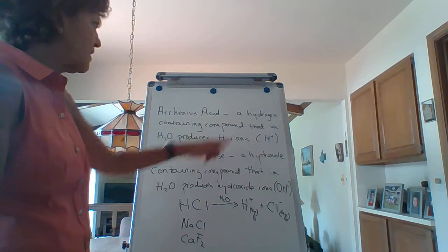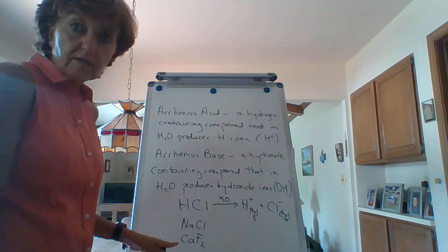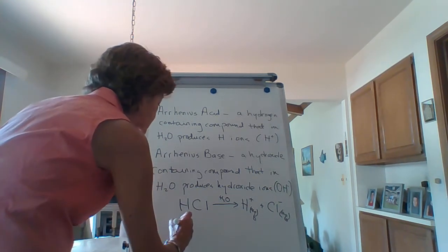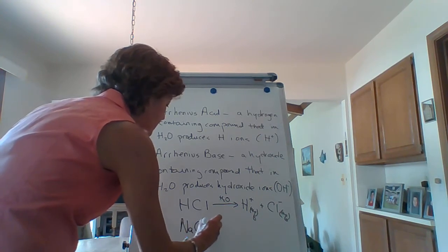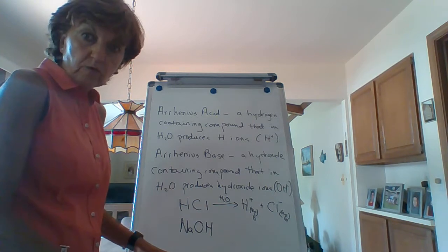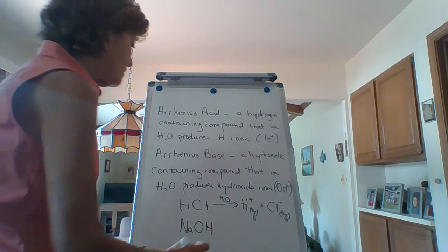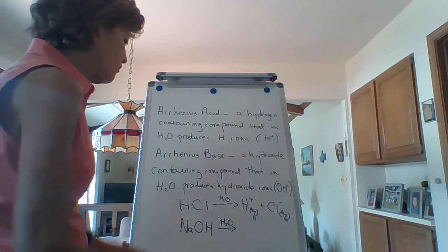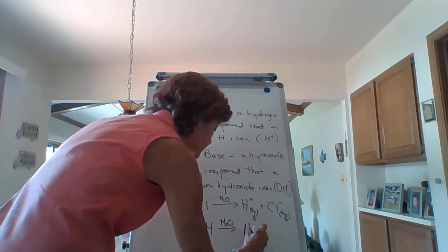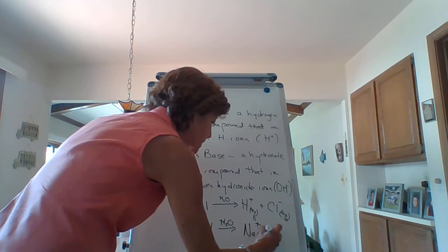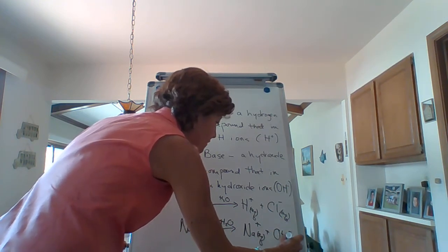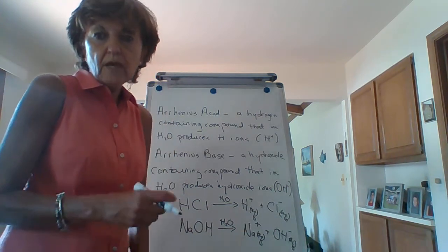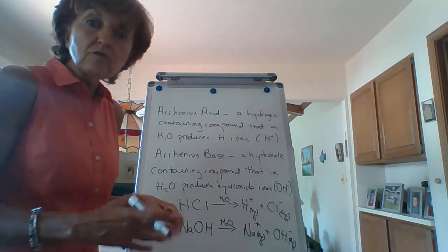Why not? Because it has to contain a hydrogen, and this does not contain a hydrogen. What about the Arrhenius definition of a base? The Arrhenius definition of a base has to be a hydroxide-containing substance. So sodium hydroxide would be considered an Arrhenius base. In water, it's going to dissociate to produce a sodium ion (aqueous) and a hydroxide ion (aqueous). So because we see this hydroxide ion, that makes sodium hydroxide a base.